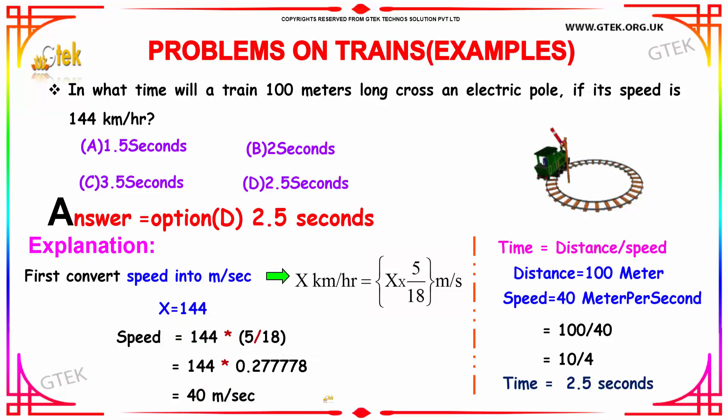Now I need to calculate the time. Time equals distance by speed. So the distance is 100 meters and your speed is 40. 100 divided by 40, you got 2.5 seconds. So the train will take 2.5 seconds to cross the electric pole.